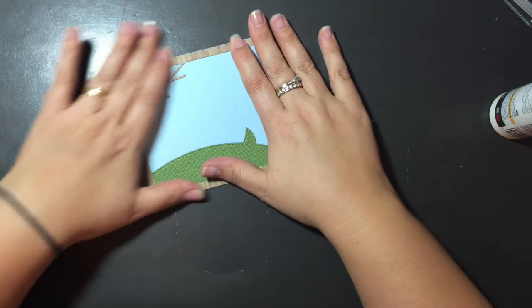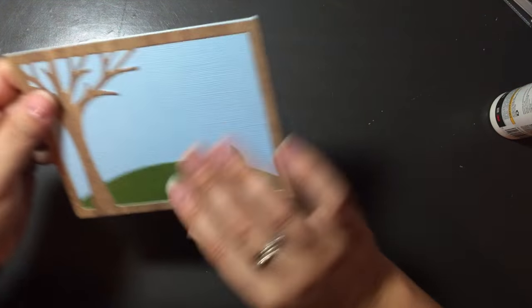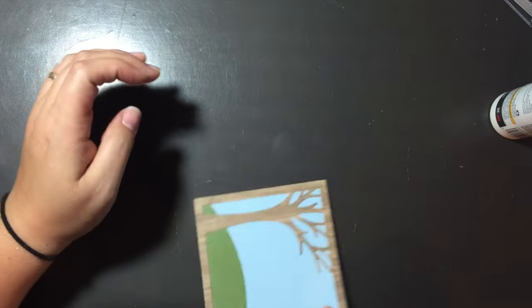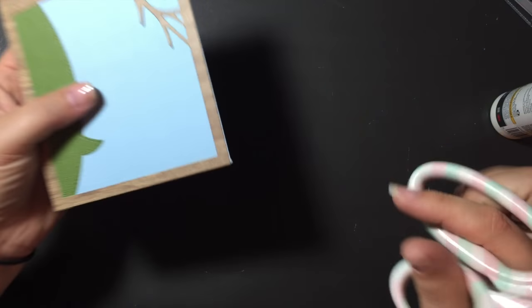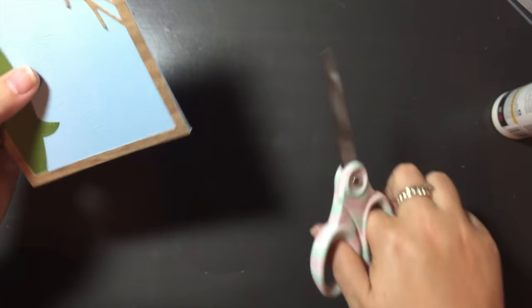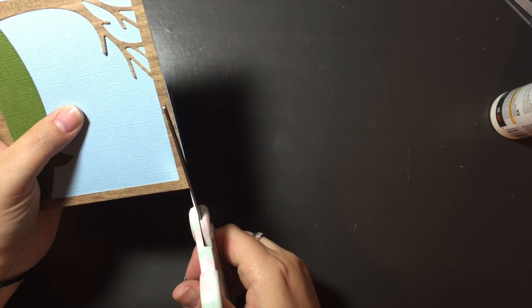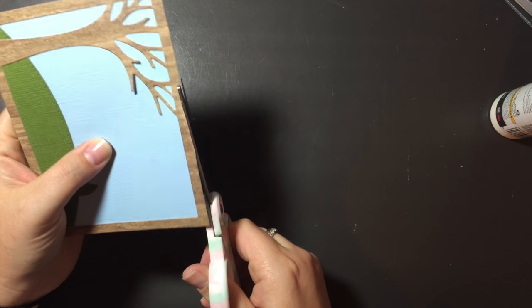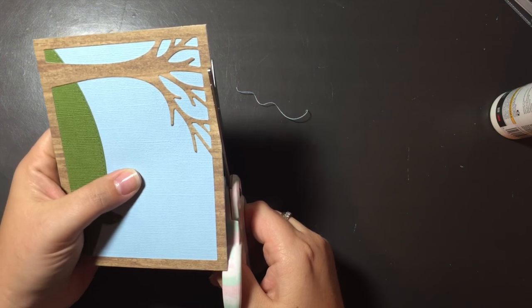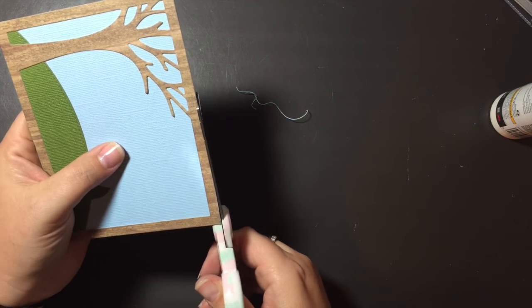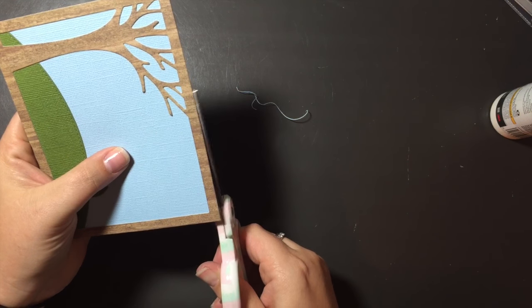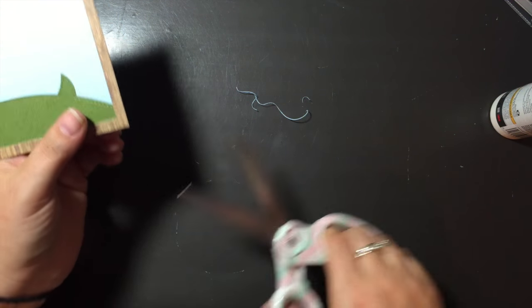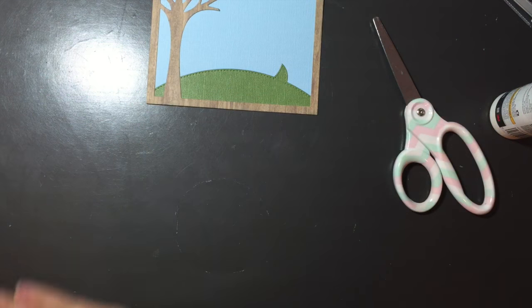See, I kind of did it wonky so there's a little bit sticking out. So, easy enough to fix though. So, I'm just going to take my scissors. I know, it's very picky. Just this tiny blue edge that's sticking out here. Without cutting the wood frame. There's a little bit of green down here. There we go. So, now it's perfect.